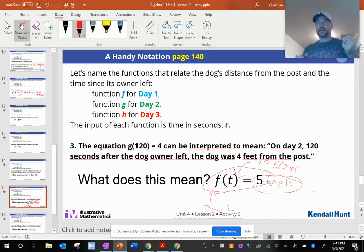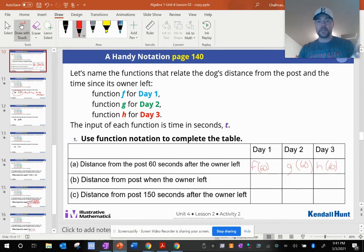You can basically express what's happening inside a graph using these letters: f of t, g of t, h of t, which means the distance that the dog is if you input a certain time into that graph. So by input, we mean we're just going to look up a certain time on that graph.